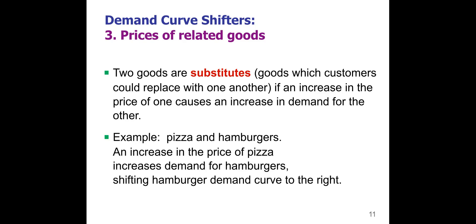Here's another example: after school you might want to go get food with friends and choose between pizza or a hamburger — those are substitute goods. The prices, quality of food, and location of each place are all things buyers think about when deciding between substitutes.